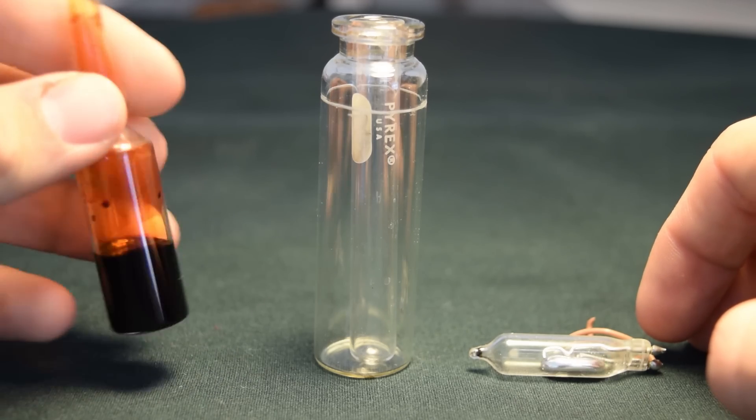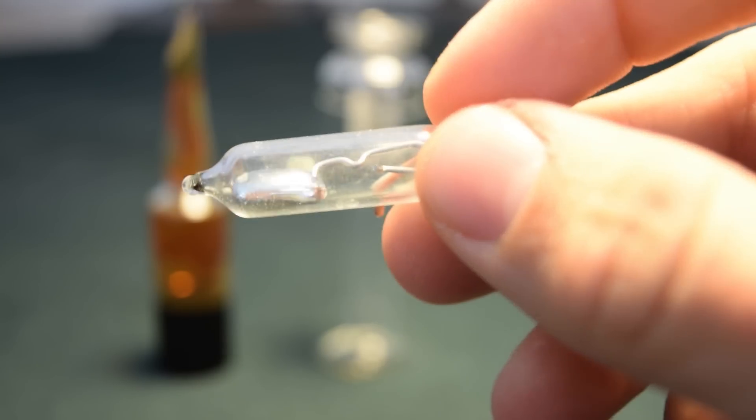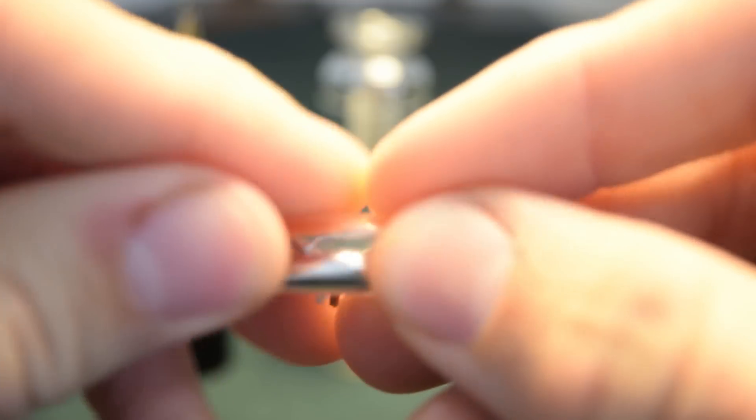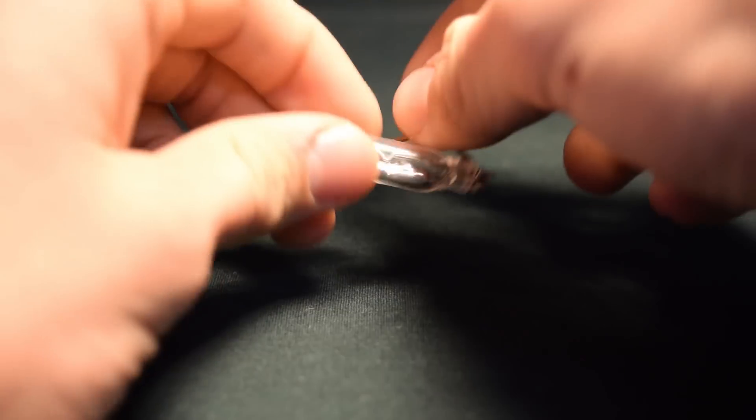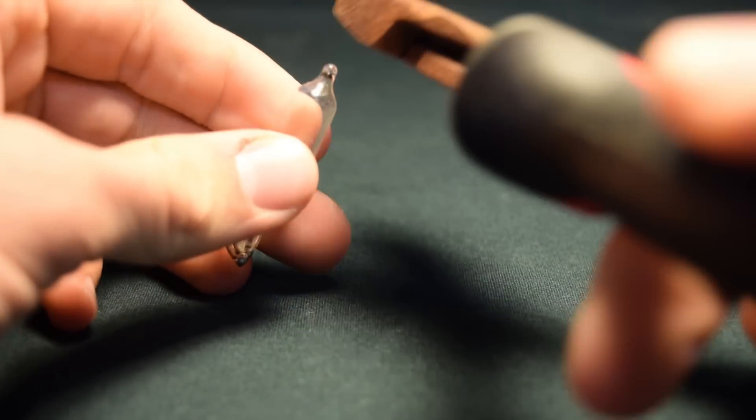These are my two favorite elements on the periodic table, and they're also both the only liquids at room temperature on the periodic table. This mercury came from a thermostat, the old type, that uses a mercury bulb.